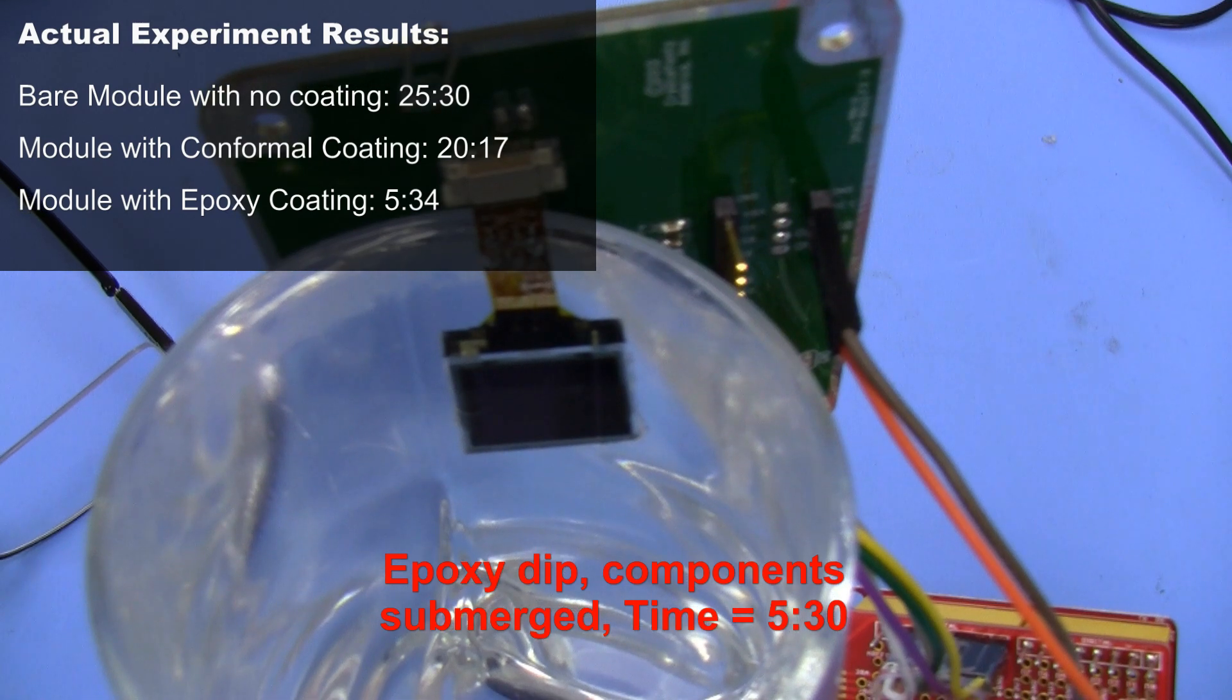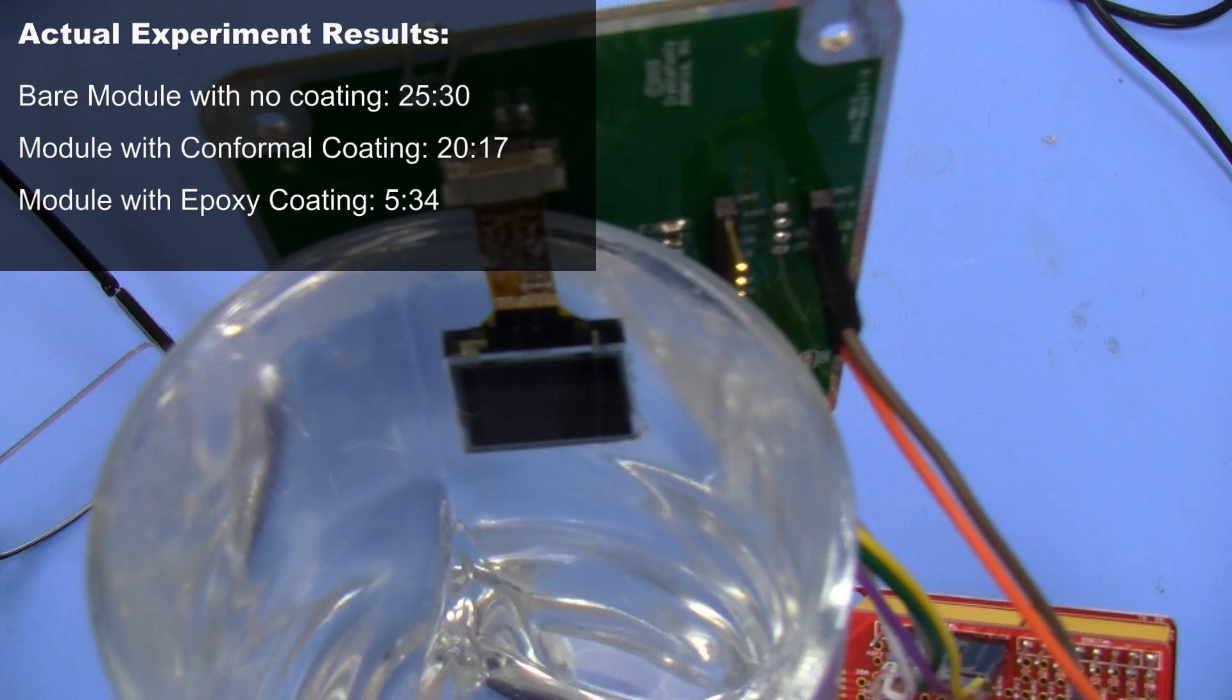After a bare module working underwater for I think a day, and the conformal coated on the components working for like I don't know, 12 hours or something, this module with the epoxy on it has lasted only like maybe four hours and it's completely dead. So I don't have a good solution for waterproofing the components on the tail.